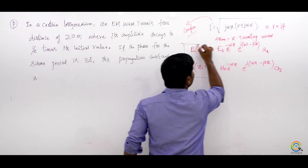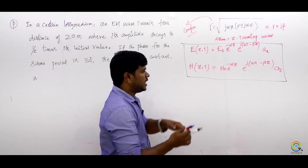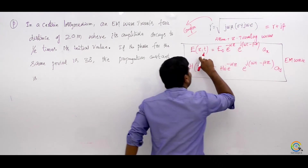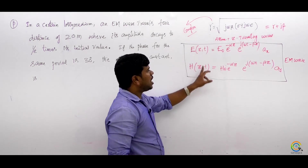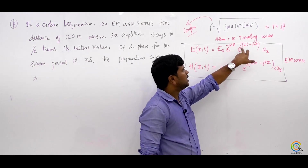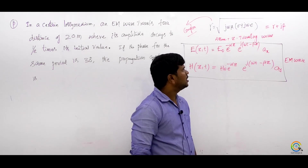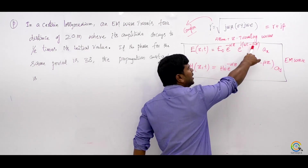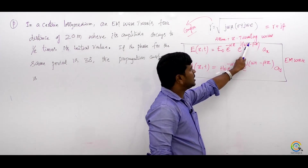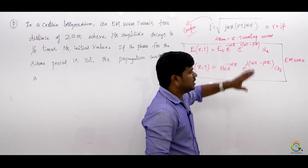These two equations must be remembered. They are called the EM wave equations — one for the electric field and one for the magnetic field. The term e power j(omega t minus beta z) is called the harmonic. Beta is called the phase shift constant per unit length, and omega is called the phase shift constant per unit time.